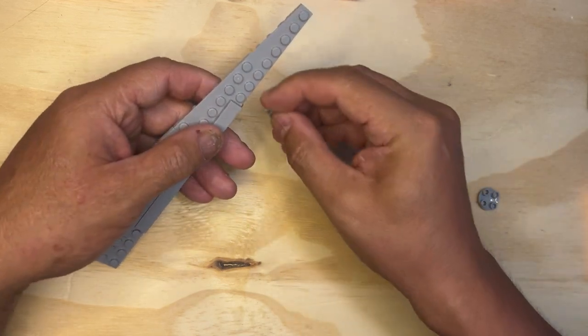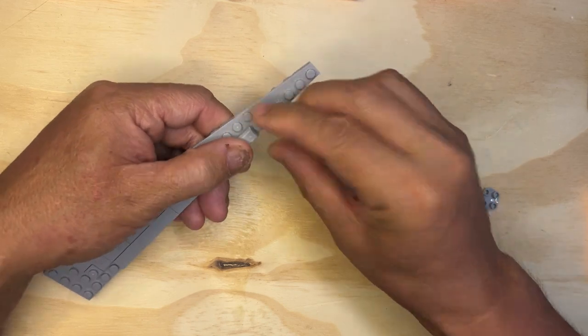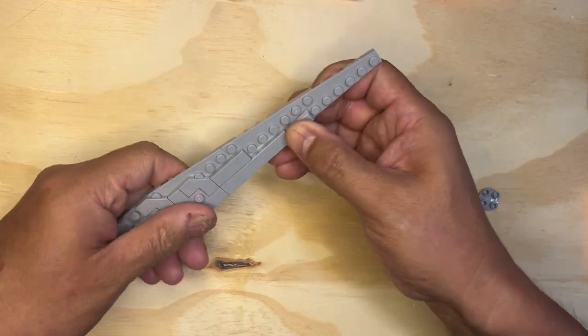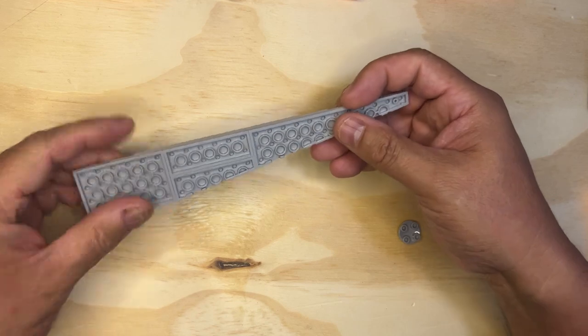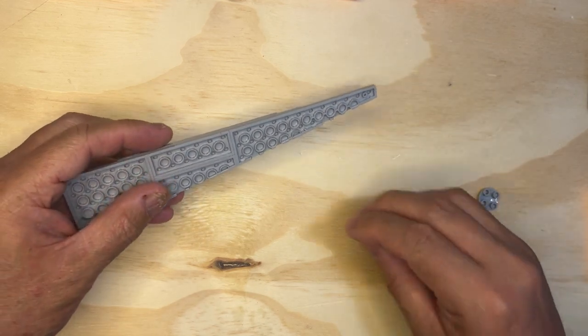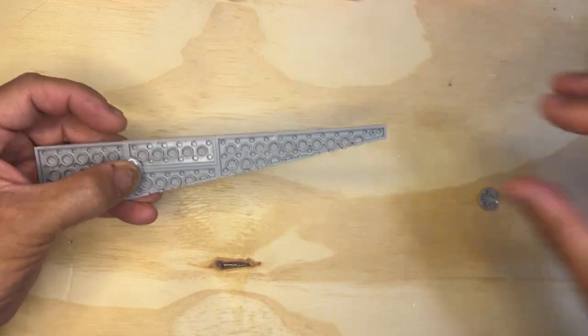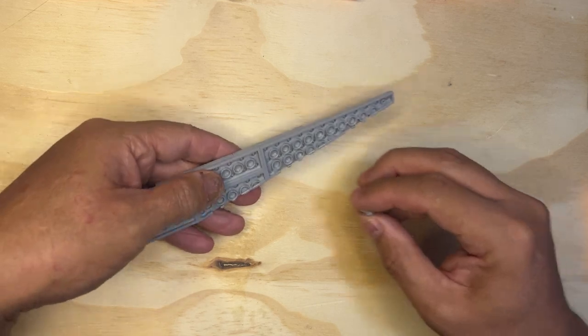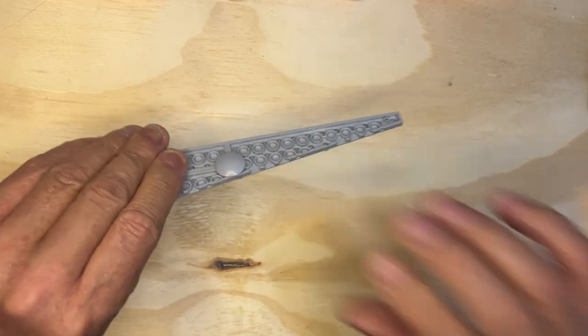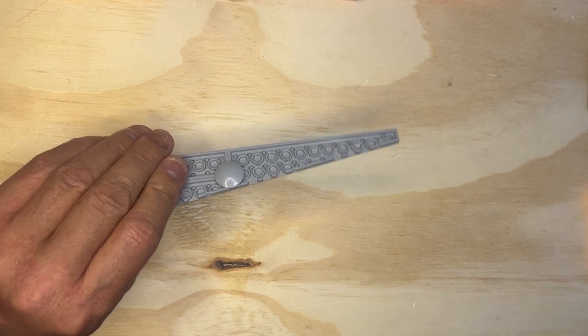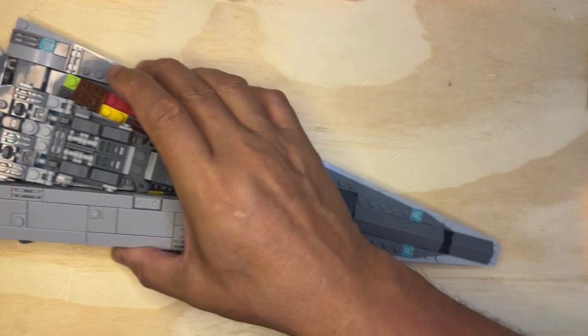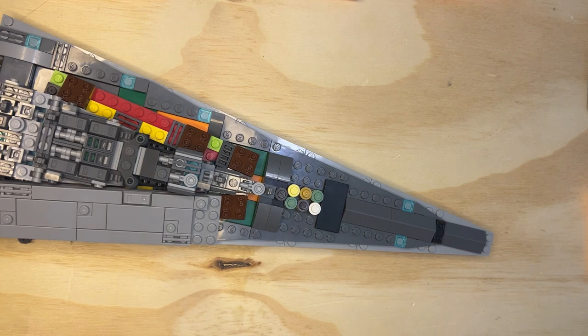I'm going to take this, put it right here, and then I'm going to flip it. I'm going to put this one here, that one there, just like that. And then I get to bring this puppy in, the big ship.